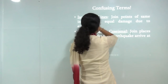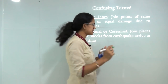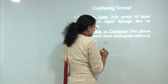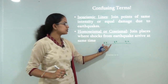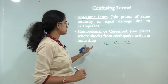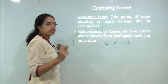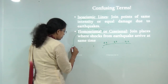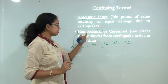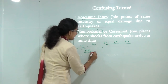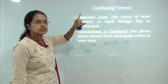There are some confusing terms: isoseismic lines and homoseismal lines. Isoseismic lines join the points of same intensity or damage caused by the earthquake — for example, all points with a Richter scale reading of 8.8. Homoseismal lines join the points where earthquake tremors were felt at the same particular time — for example, all locations that felt tremors at 8 o'clock in the morning. Isoseismal deals with intensity; homoseismal deals with time.